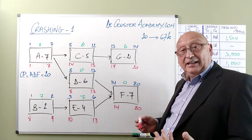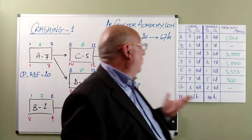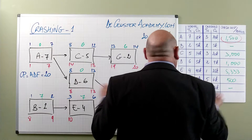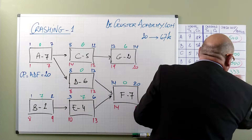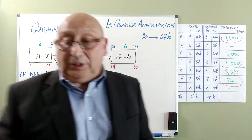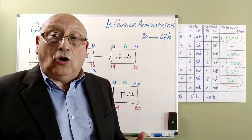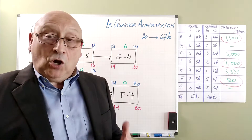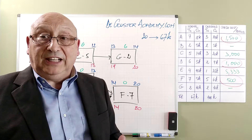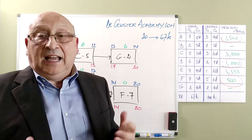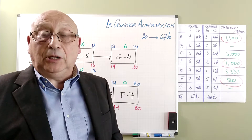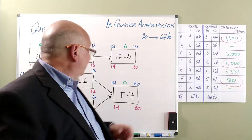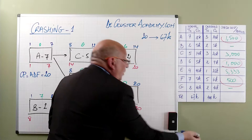We need to indicate the critical activities: A, D, and F are all critical. Since we want to find an economic overview, we start with the cheapest activity and crash that first. We will do this until we reach the minimum duration of the project, and then we will find the relationship between duration and cost.